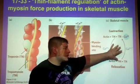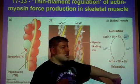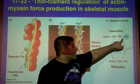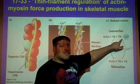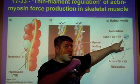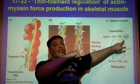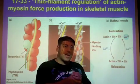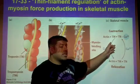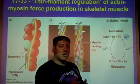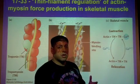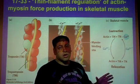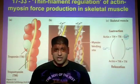As calcium levels rise, calcium binds to troponin. Troponin, which is already attached to tropomyosin, pulls the tropomyosin off of the actin filament and now myosin can interact with actin. When calcium levels decrease, this process is reversed: calcium comes off of troponin, troponin puts tropomyosin back on top of actin, and myosin can no longer bind to actin.